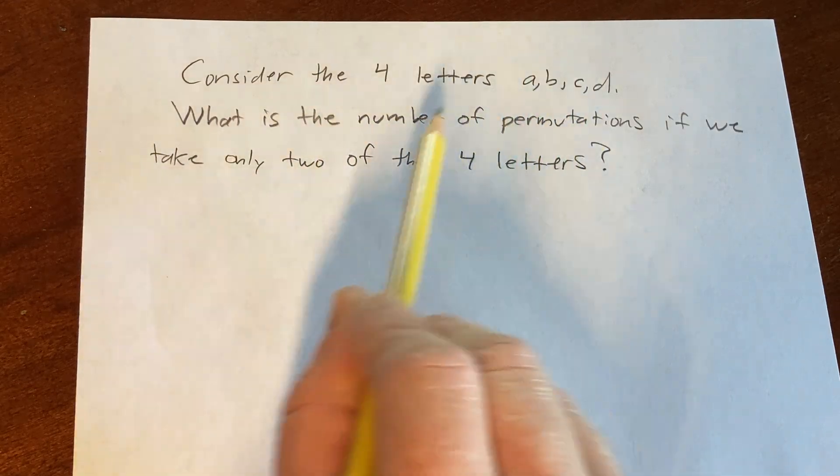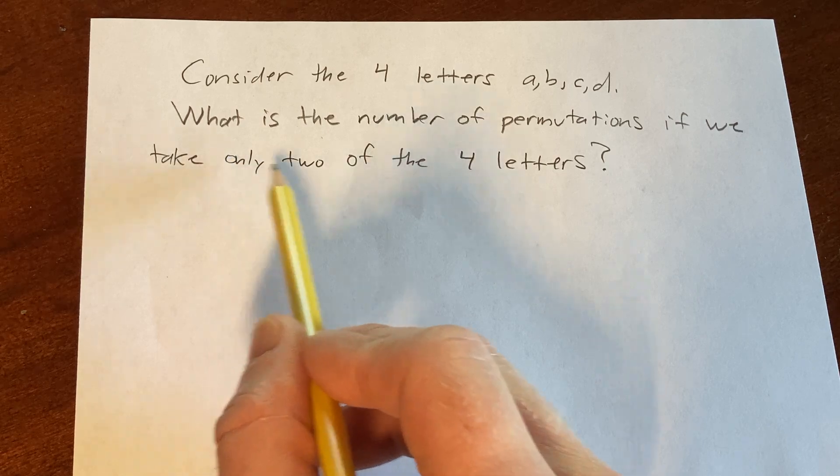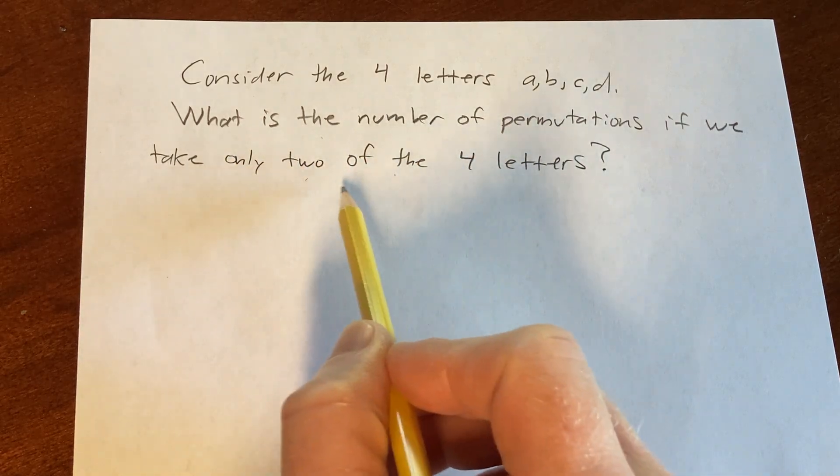Consider the four letters A, B, C, D. What is the number of permutations if we take only two of the four letters?